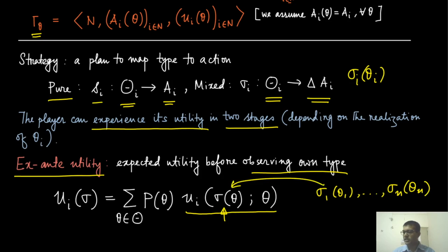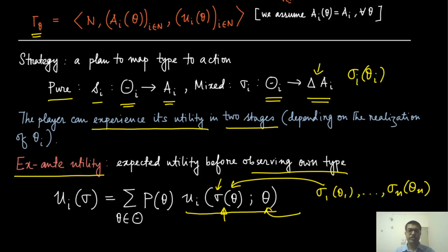Theta is the vector of all theta_i's. Once that is given, you know the utility there. This utility, if there are mixed strategies, is the expectation with respect to those mixed strategies — the expectation with respect to this randomization. But at the same time, these thetas are also unknown random variables, so we take an expectation with respect to theta. In this case, we take the expectation with respect to the whole vector theta because player i also does not know what its own type is.